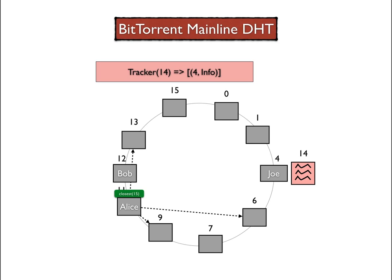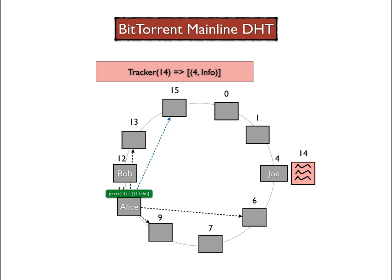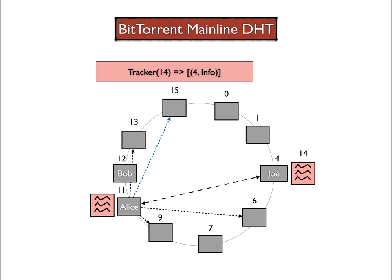Now that Alice knows about a closer node but still has not obtained the tracking information, she requests tracking information from node 15. Since node 15 has tracking information for that file, it returns all the peers it knows of who are providing the file — in this case, Joe with ID 4 — as well as the information on how to connect to Joe, such as IP address and port number. Alice can now establish a direct connection to Joe and obtain a copy of the red file. After having received its copy, Alice announces to the network that she is also providing a copy of file 14 by sending an announce message to the closest node she found during the discovery phase, in this case node 15.